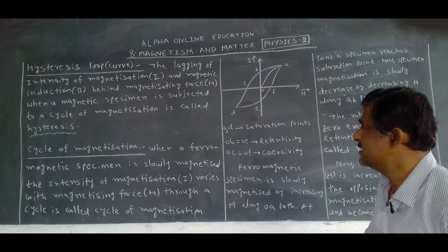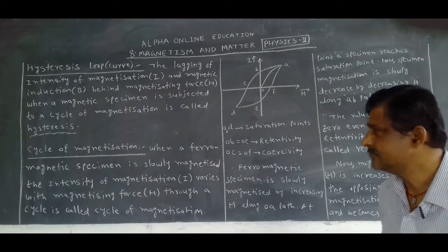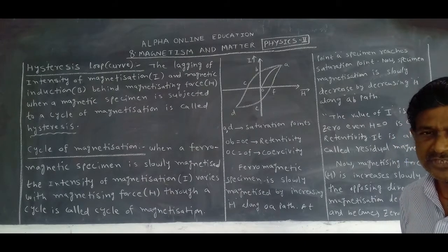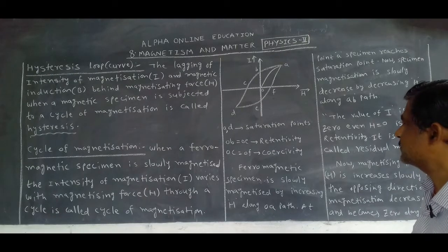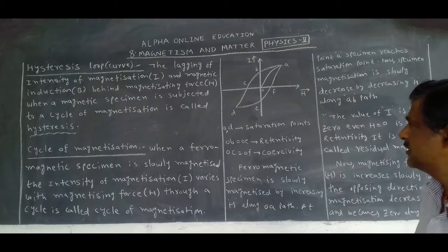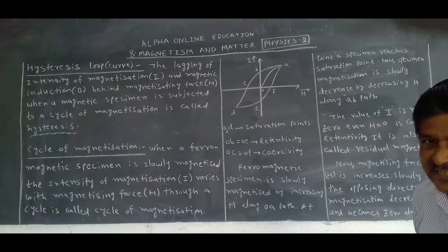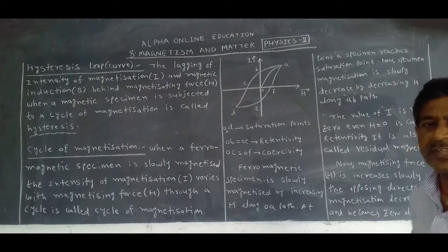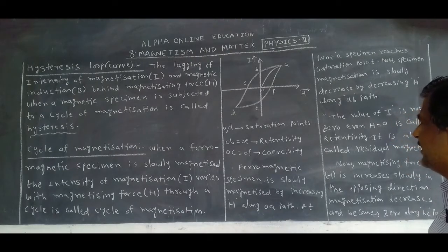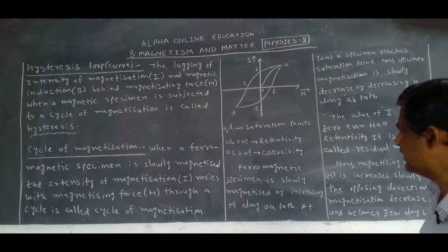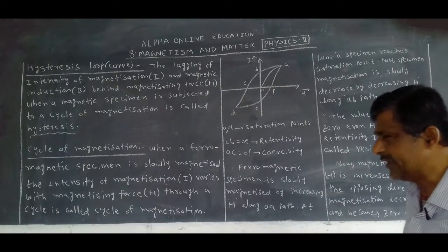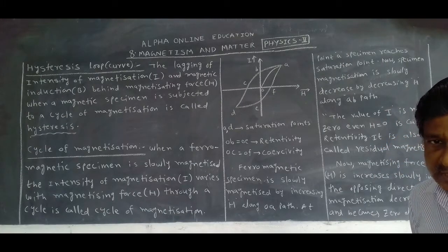First we want to discuss what is hysteresis, then what is the hysteresis loop. There are some technical words in this topic. Hysteresis is the lagging of intensity of magnetization I and magnetic induction B behind the magnetizing force H, when a magnetic specimen is subjected to a cycle of magnetization.